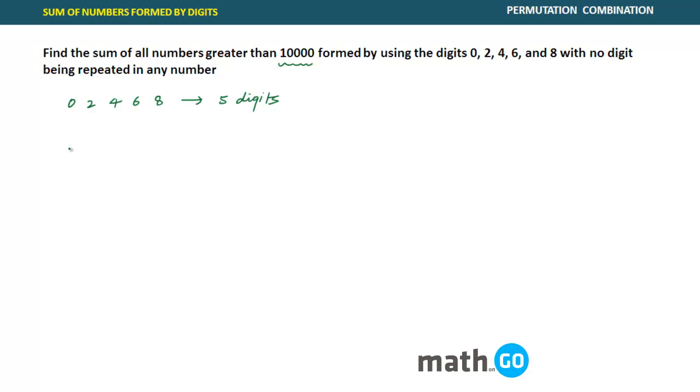If I directly start applying the formula here, the sum of all of them would be 0 plus 2 plus 4 plus 6 plus 8 into 4 factorial into 10 raised to power 5 minus 1 by 9. This would be the answer. But there is a problem here. What is the problem?